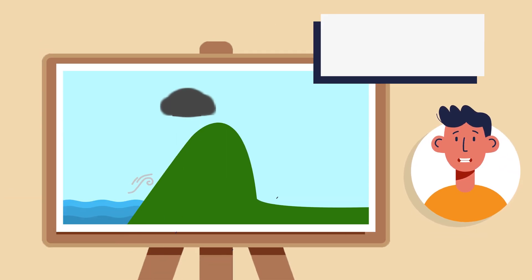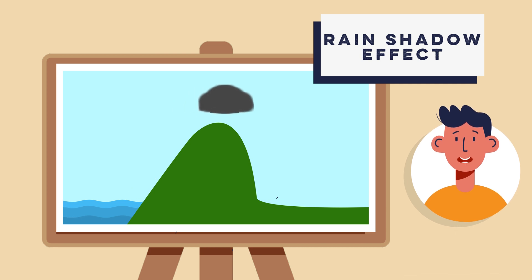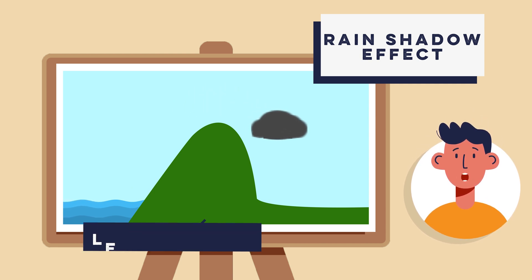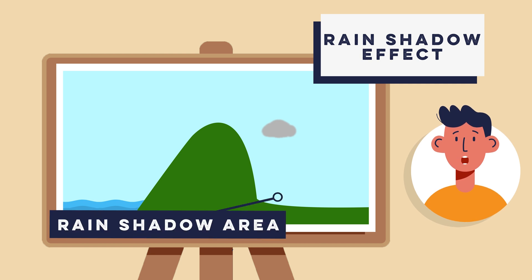Step five is the rain shadow effect. Once the air has passed over the mountain, it descends on the leeward side. As it descends, it warms up and becomes drier. This area receives much less precipitation and is known as the rain shadow area.